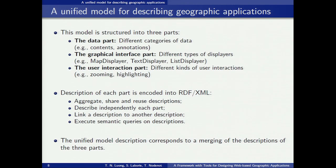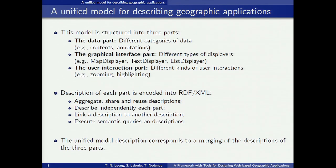The data part describes different categories of data, for example content and annotation. The interface part describes different types of displayers, for example map display, text display, or list display. The interaction part describes different kinds of interactions, for example zooming in on a map or highlighting on the text. We use RDF XML to encode descriptions because it is used for describing resources on the web and is a recommendation of the World Wide Web Consortium.